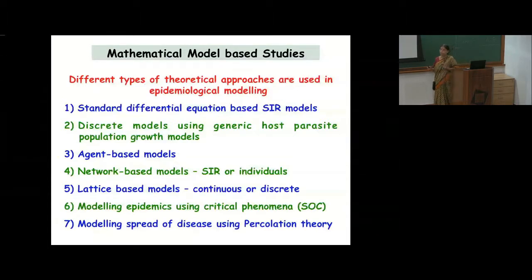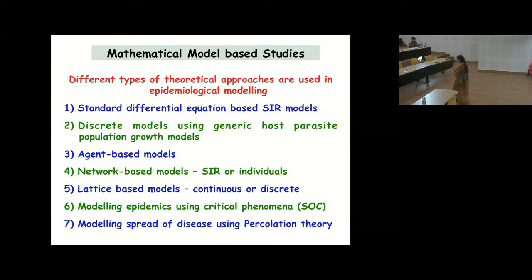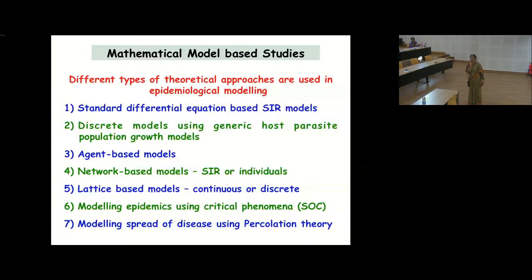There are several different mathematical methods you can use for analysis and modelling of disease. The main theoretical approaches include: standard differential equation-based SIR models, discrete models, agent-based models, network-based models, lattice-based models, modelling epidemics using critical phenomena, and percolation theory. A lot of papers using the last few approaches are primarily by physics people, but there is something there to learn and potentially incorporate into your model.